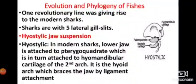Sharks can be identified by the following features: five lateral gill slits, a fusiform body, paired pectoral and pelvic fins, teeth particularly suited for biting, and a pleurodont tooth type. The tail is also a distinguishing feature.